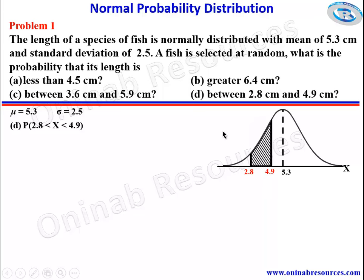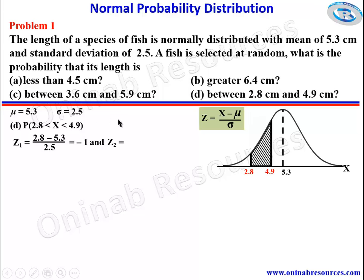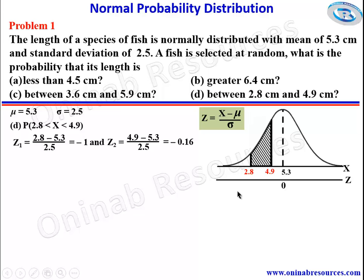We convert to z-scores: z1 = (2.8 − 5.3) / 2.5, which gives negative 1. And for z2: (4.9 − 5.3) / 2.5, which gives negative 0.16. On the z-score axis, the mean is still 0, and we have negative 1 and negative 0.16.